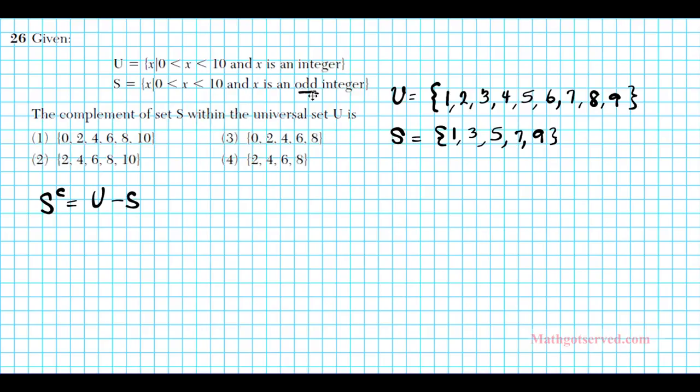Or you can think about it another way. If a number is not odd, it's what? It's even, right? So all the even numbers between 0 and 10 should be the complement of set S. So S complement which is set U take away S is basically going to be 2, 4, 6, 8. These are all the elements in set U that are not in set S. That's what the complement of a set is.